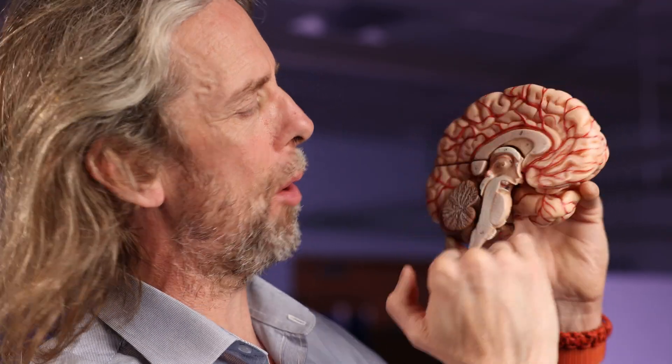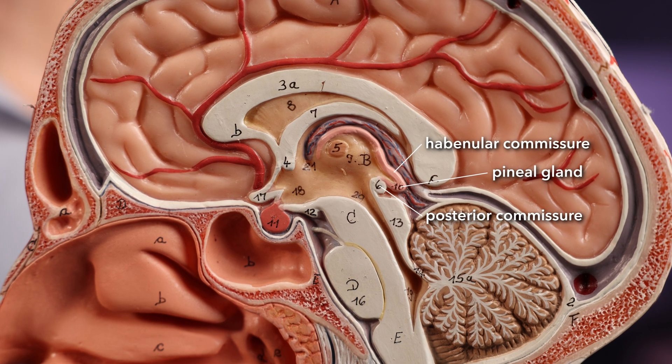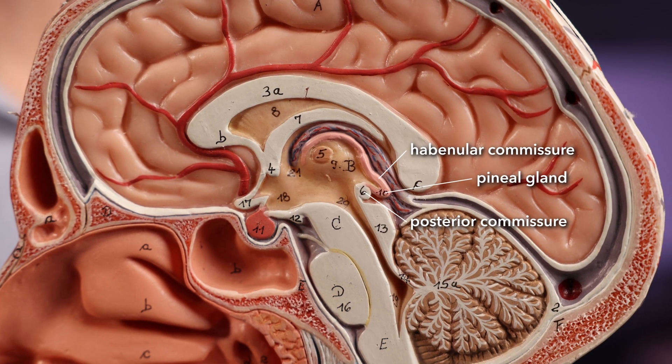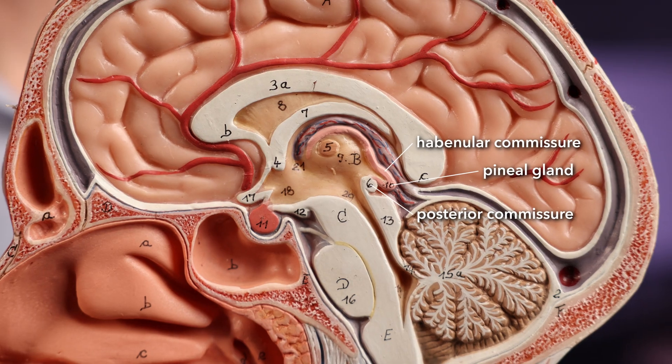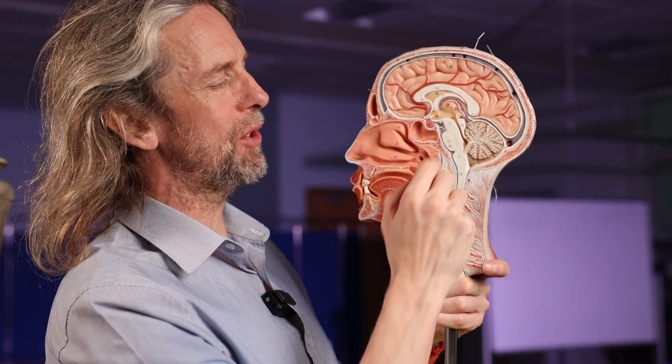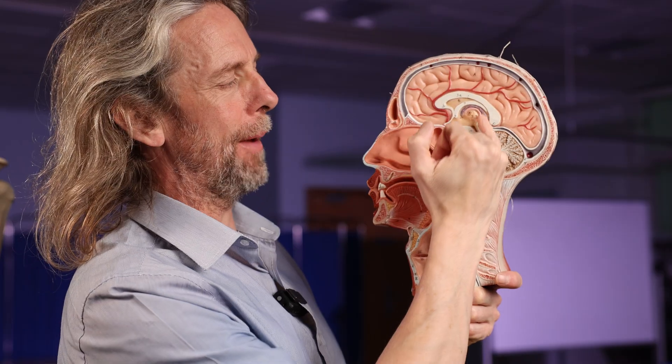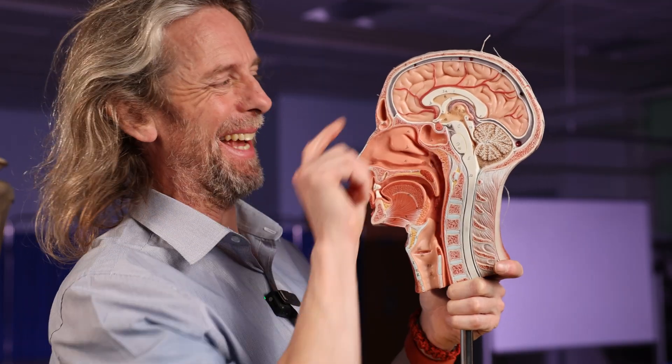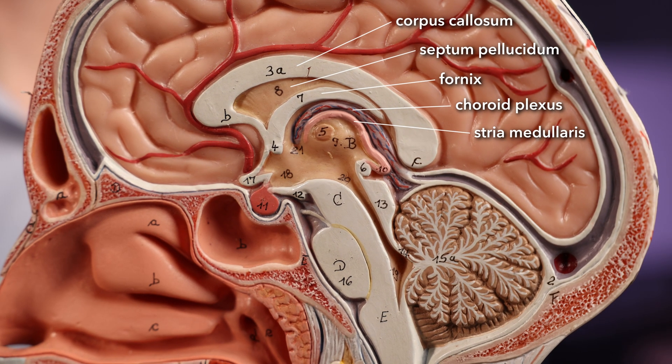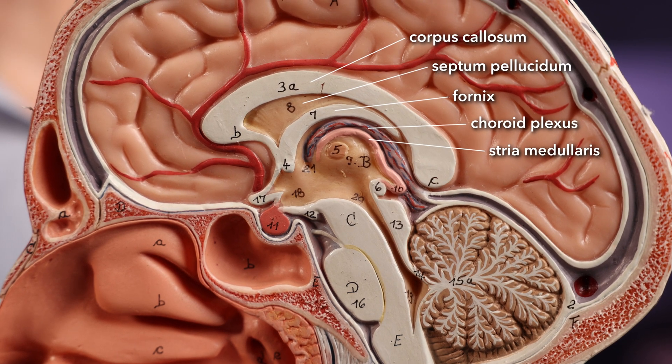On this model here, there's the pineal gland and there's the pineal stalk. That superior leg — the first part — is the habenula commissure. As it curls over the top around the thalamus, that is the stria medullaris. That is the white matter tract bringing information to the habenula nuclei that are anterior to the pineal gland. Habenula means 'reins' — if you've got two of these, they look like the reins of a horse. So: stria medullaris, choroid plexus, fornix, septum pellucidum, corpus callosum.